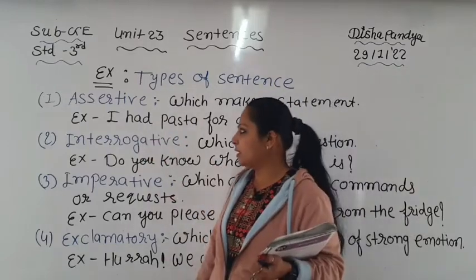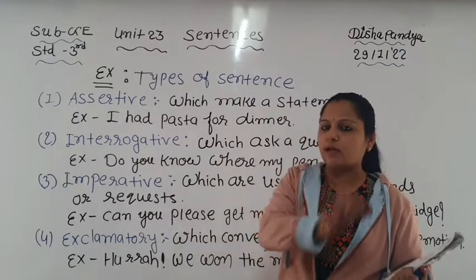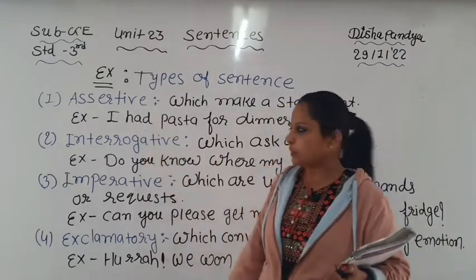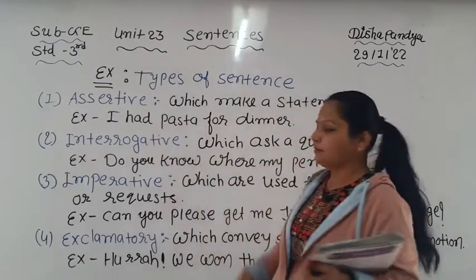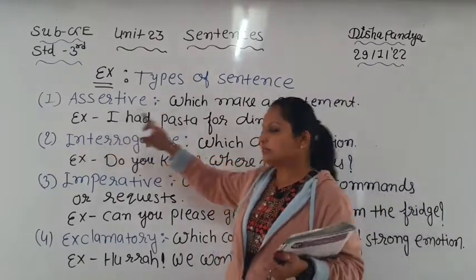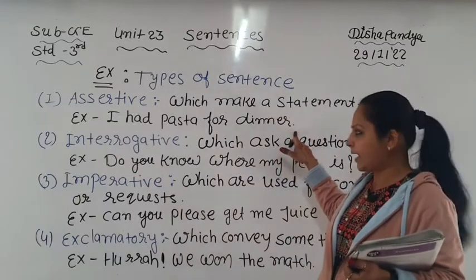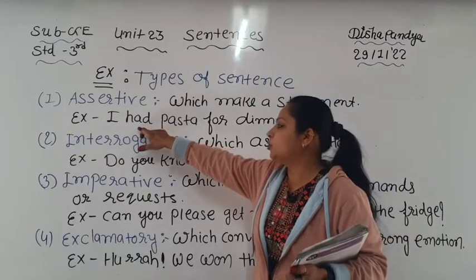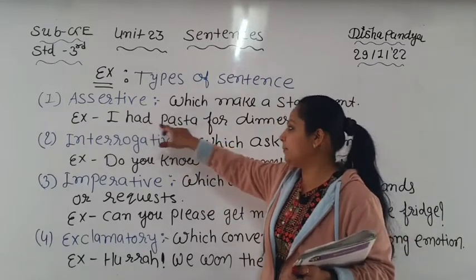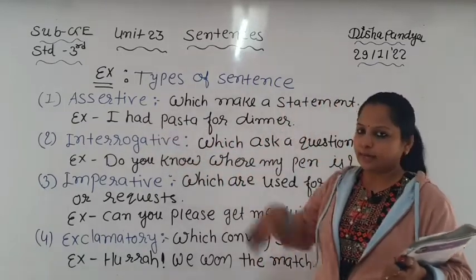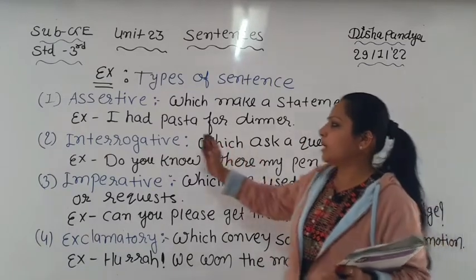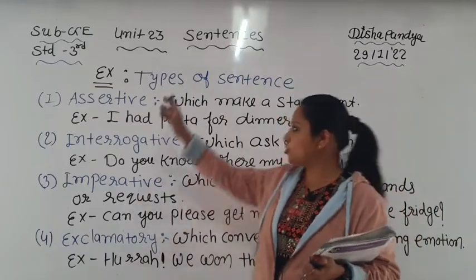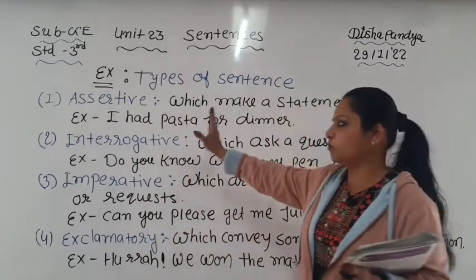Assertive sentences have two types: positive and negative. 'I had pasta for dinner' is positive. If we say 'I did not have pasta for dinner' - that becomes a negative assertive statement. When there is a full stop and a normal statement, the sentence is assertive.